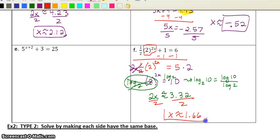If you feel like you need to try one more, go ahead and pause the video and try E. Your final answer for E should be x is approximately negative 0.079. So go ahead and try E if you feel you need some extra practice.